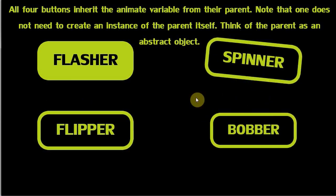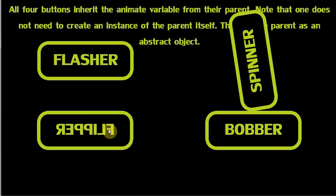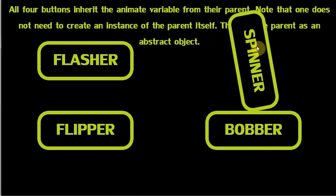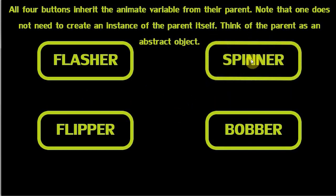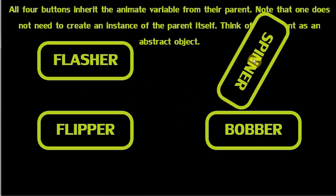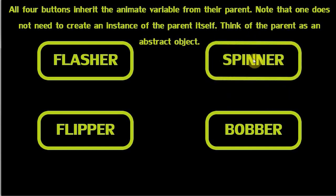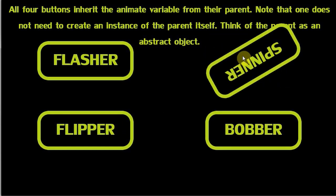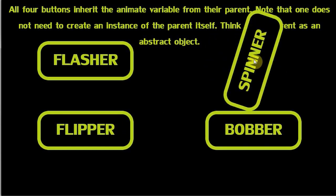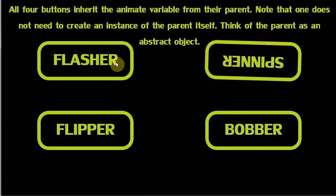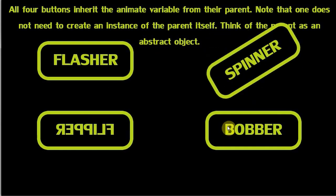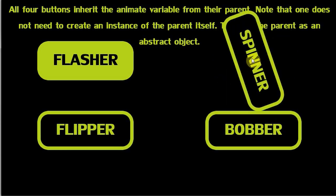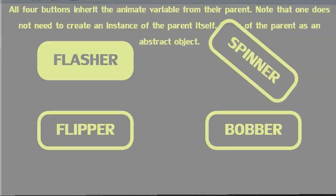None of these objects actually have the code to tell them when they should animate. They just have a variable that says if I can animate, then I will. They don't know when they should animate — it's their parent that says animate when the mouse is over you. So as long as they are inheriting from that parent, they will do some sort of animation when the mouse is over them.